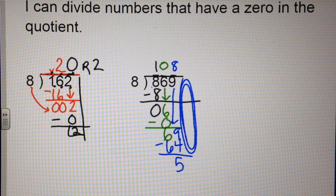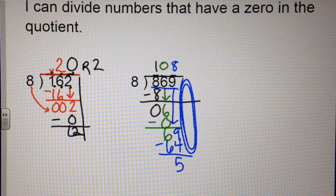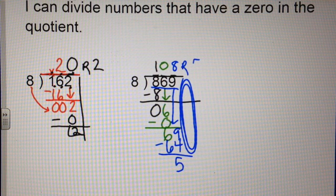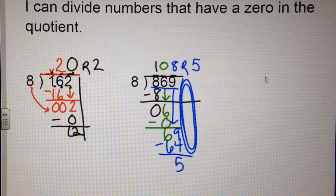I had 3 numbers in my dividend. I have 3 numbers in my answer. So 5 is my remainder.